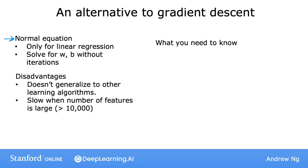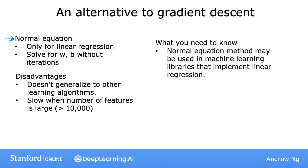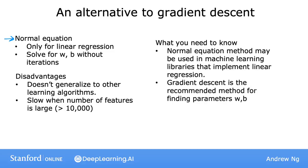Almost no machine learning practitioners should implement the normal equation method themselves. But if you are using a mature machine learning library and call linear regression, there is a chance that on the back end, you'll be using this to solve for w and b. So if you're ever in a job interview and hear the term normal equation, that's what this refers to. Don't worry about the details of how the normal equation works. Just be aware that some machine learning libraries may use this complicated method in the back end to solve for w and b. But for most learning algorithms, including how you implement linear regression yourself, gradient descent is often a better way to get the job done.